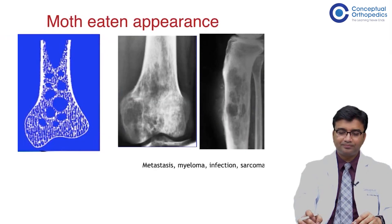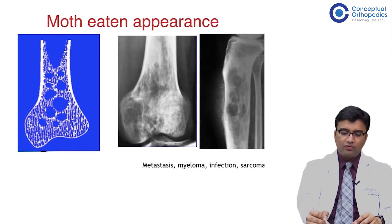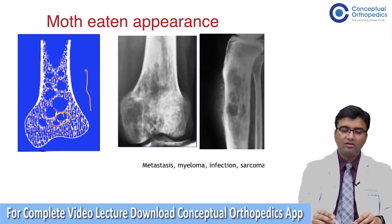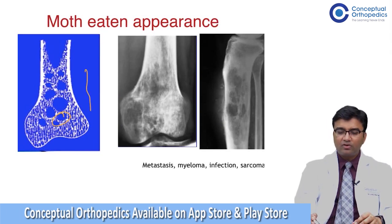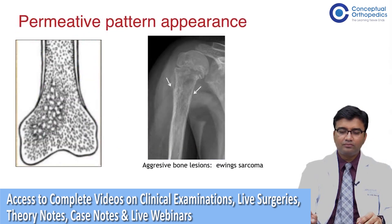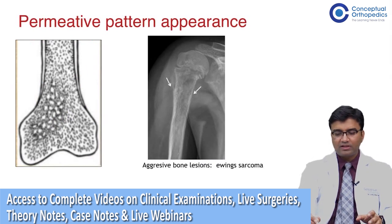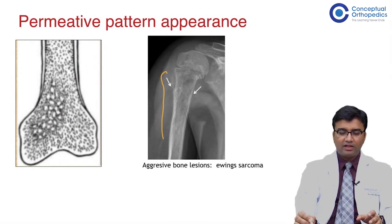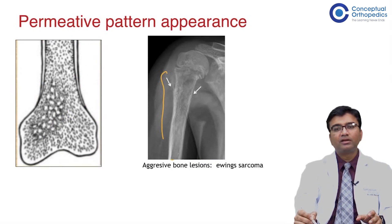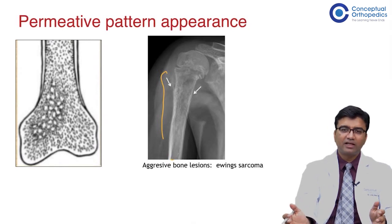The moth-eaten appearance shows various punched-out lesions as seen in this pictorial diagram, and can be seen in metastasis, myeloma, infection, and sarcomas. The permeative type involves the entire epiphyseal and diaphyseal shaft with multiple small destructive lesions all around, mostly seen in aggressive patterns like Ewing sarcoma or myeloma.